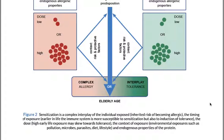Sensitization is a complex interplay of: the individual's inherited risk of becoming allergic; the timing of exposure — earlier in life the immune system is more susceptible to both sensitization and tolerance induction; the dose — high early-life exposure skews towards tolerance; the context of exposure — environmental factors such as pollution, microbes, parasites, diet, lifestyle; and endogenous properties of the protein.